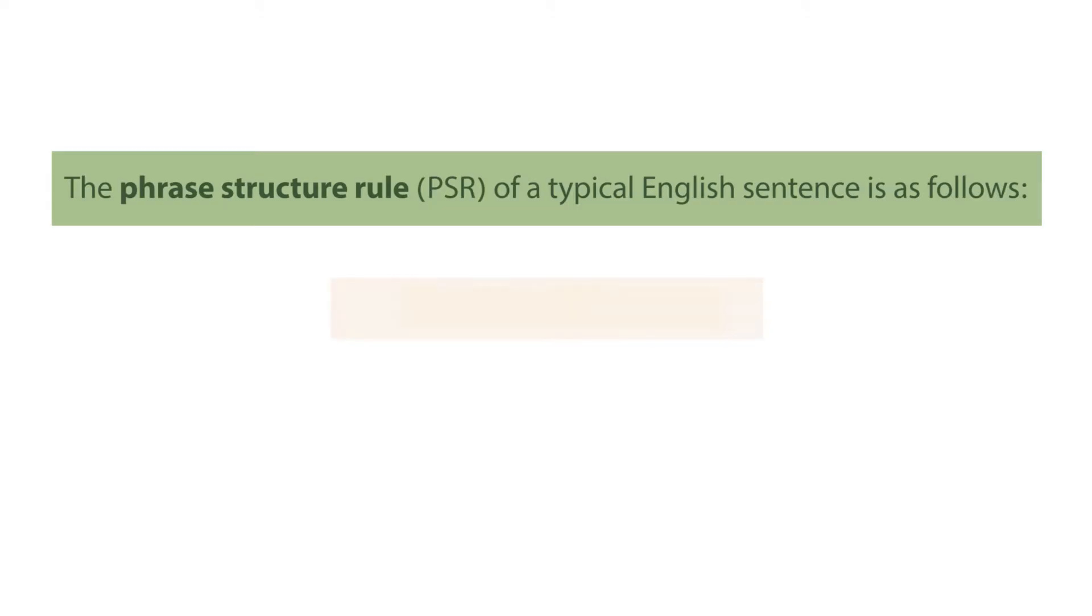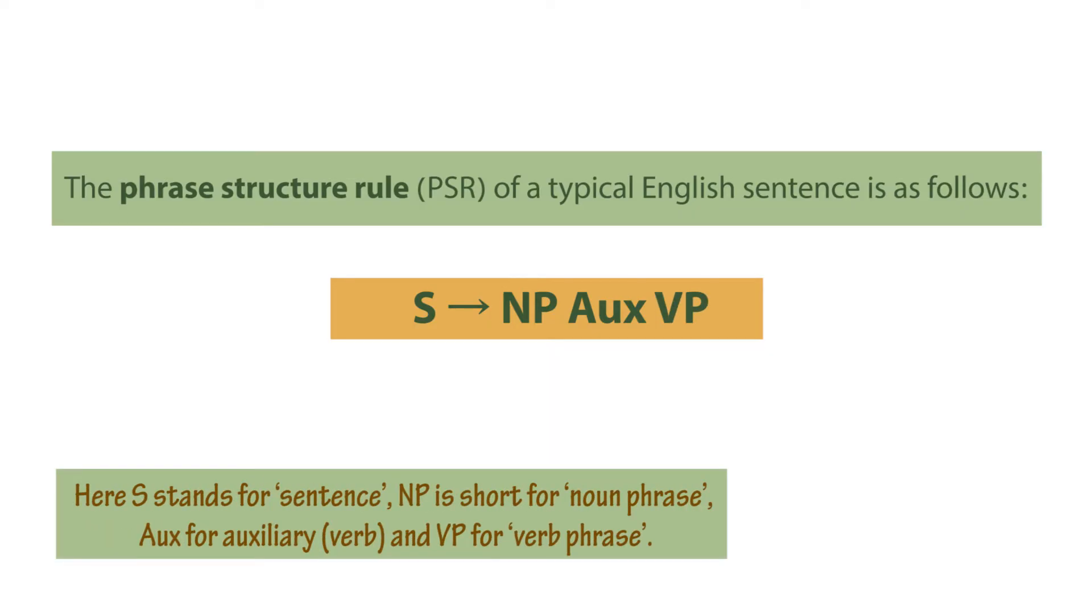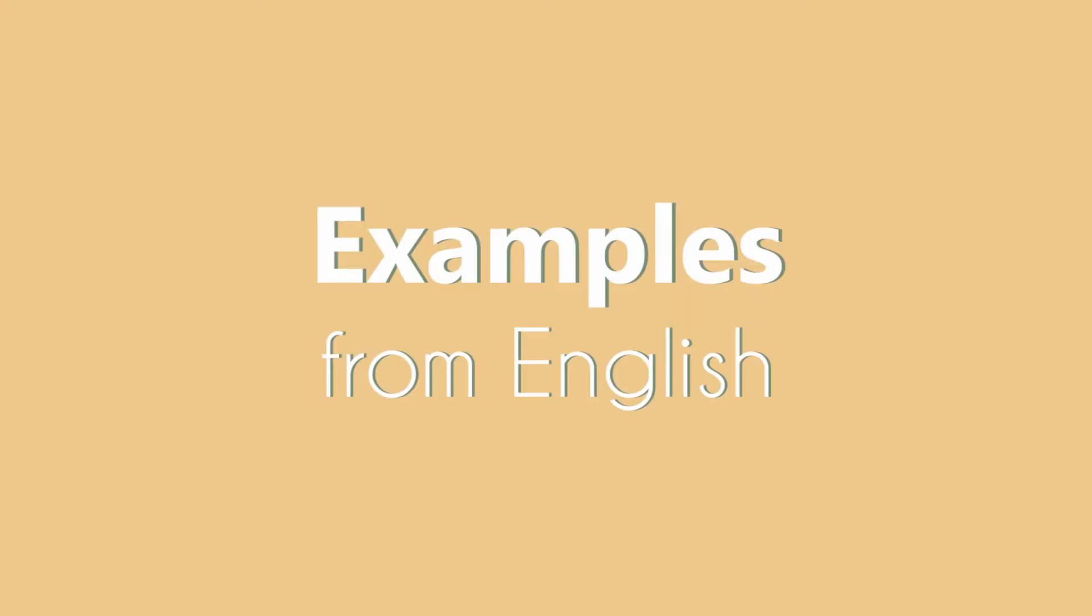A typical English sentence can be rewritten as follows: a sentence consists of a noun phrase followed by an auxiliary verb followed by a verb phrase. I can give you a basic sentence showing the structure. For example, the English sentence 'I will run' - you see S at the top, we're going to get this at the top of every tree diagram for every English sentence.